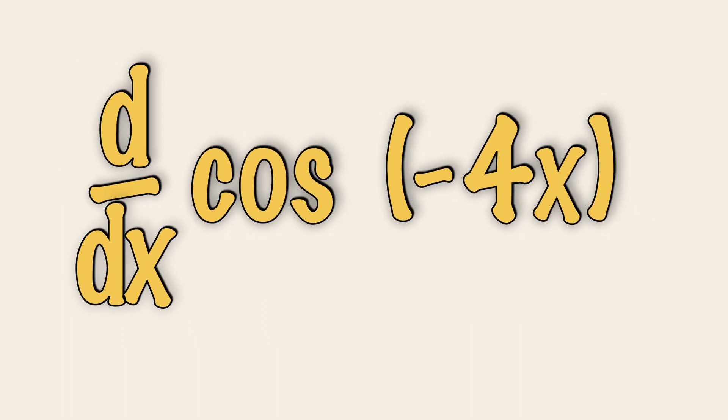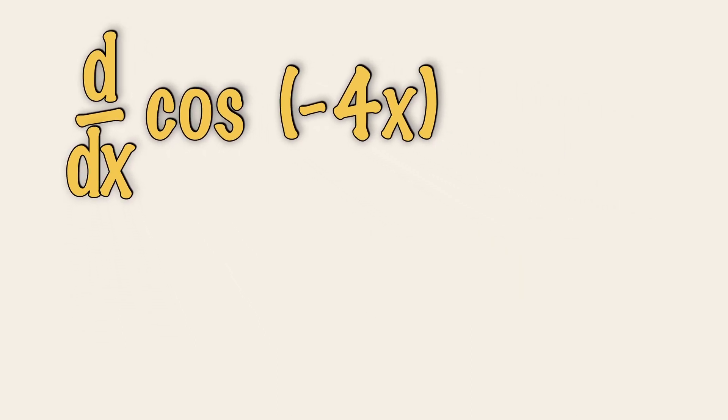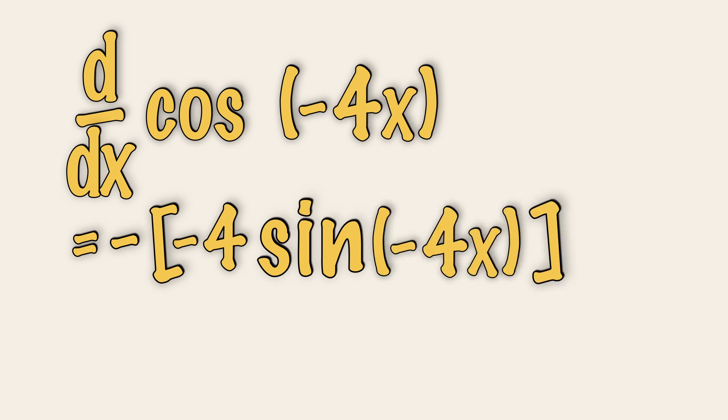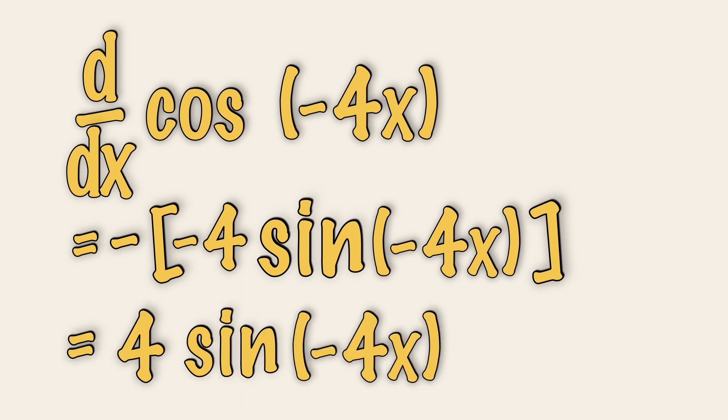So let's try another one. Differentiate the angle, which gives us minus 4. Convert cosine to a negative sine. At this point, you can place the negative sign outside and introduce a square bracket, which gives us minus minus 4 sine minus 4x. Simplifying, we will then have 4 sine minus 4x.